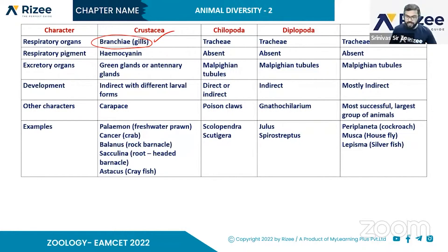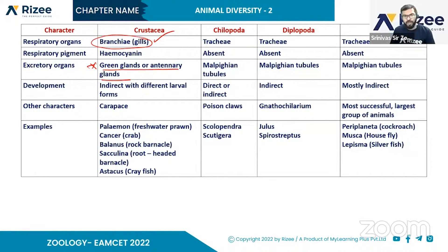Excretory organs are very important. Green glands are present in Crustacea — also called antennary glands. In Chilopoda, Malpighian tubules are present. In Diplopoda and insects, Malpighian tubules are also present.